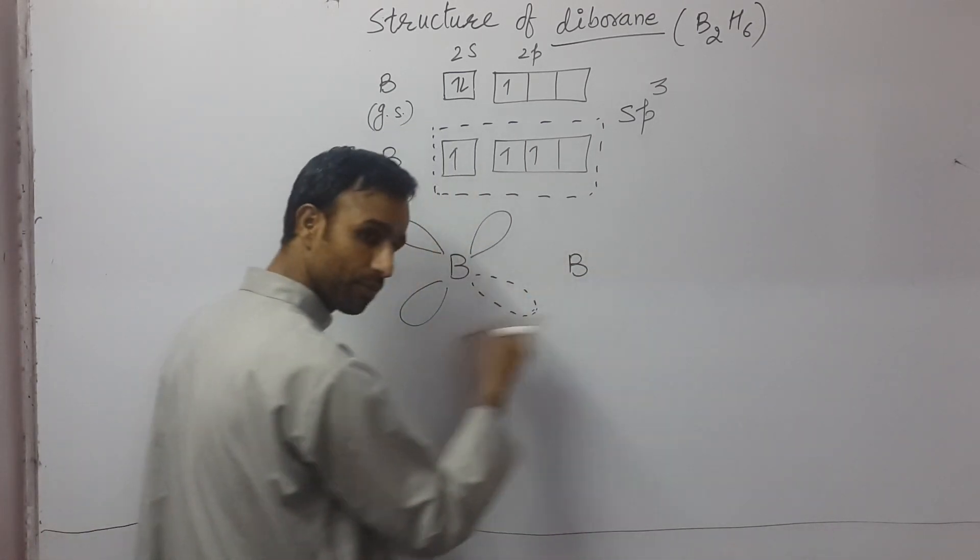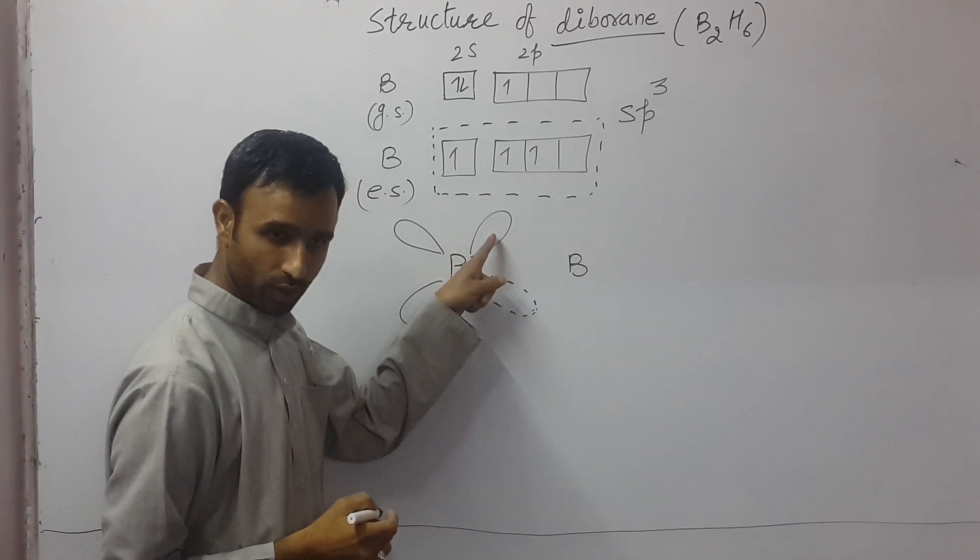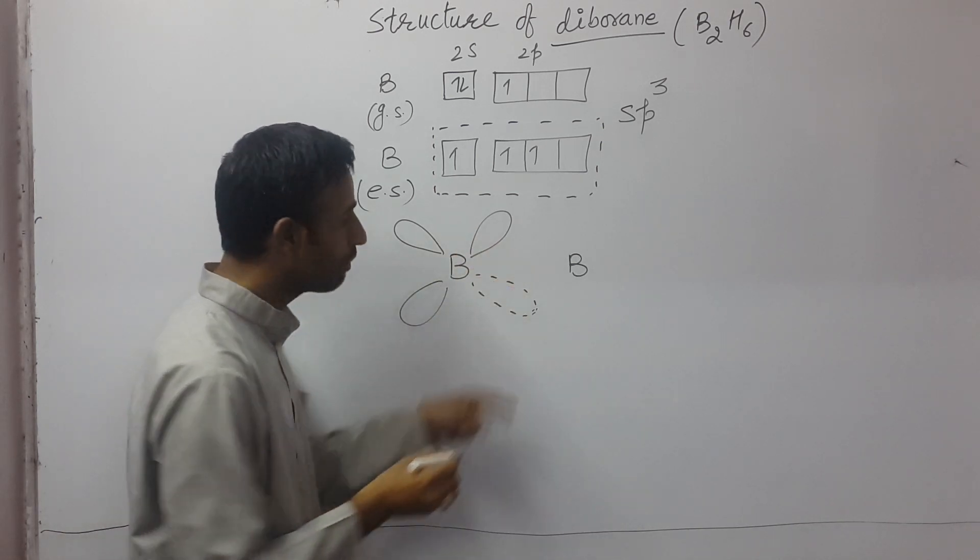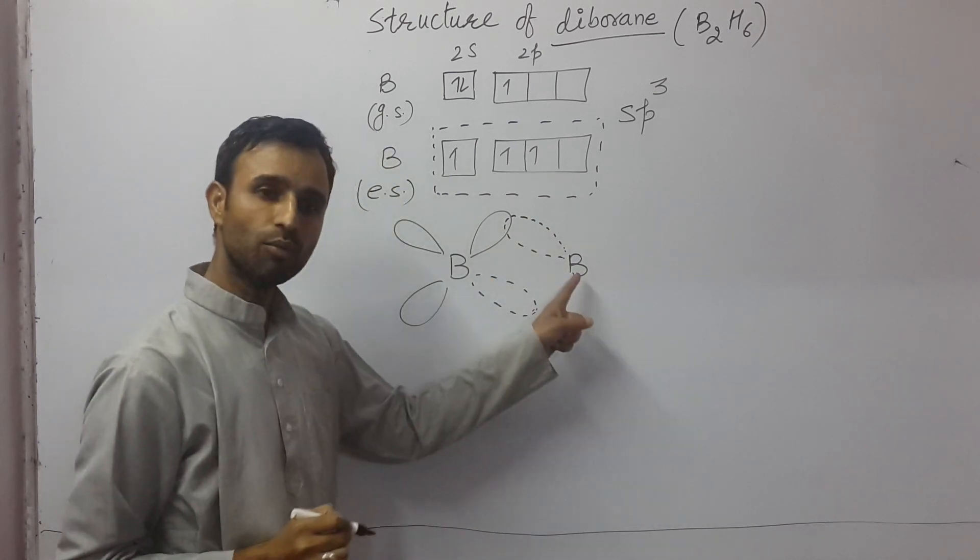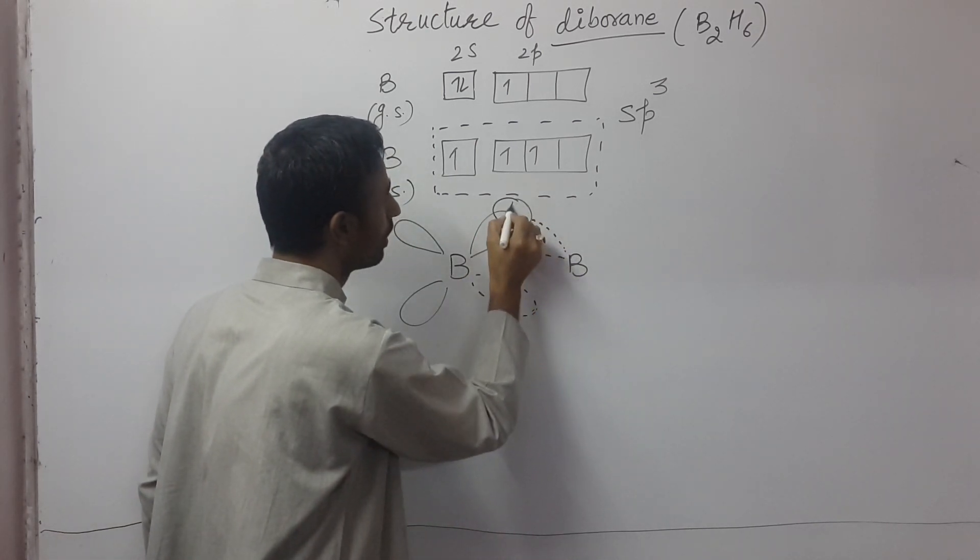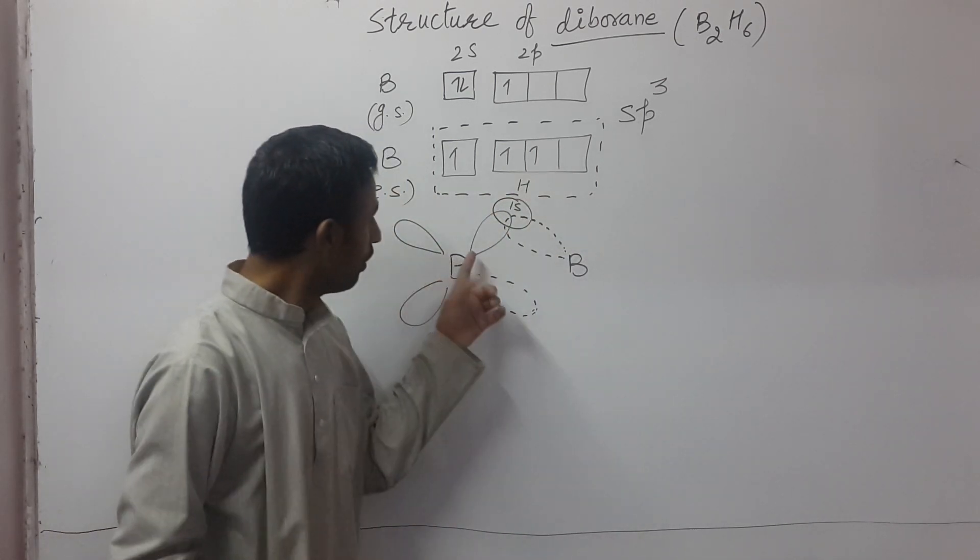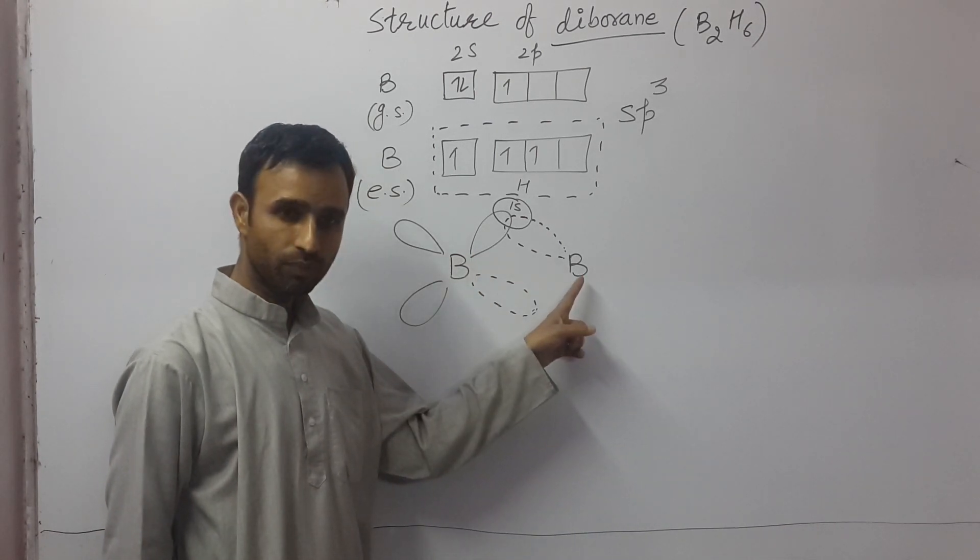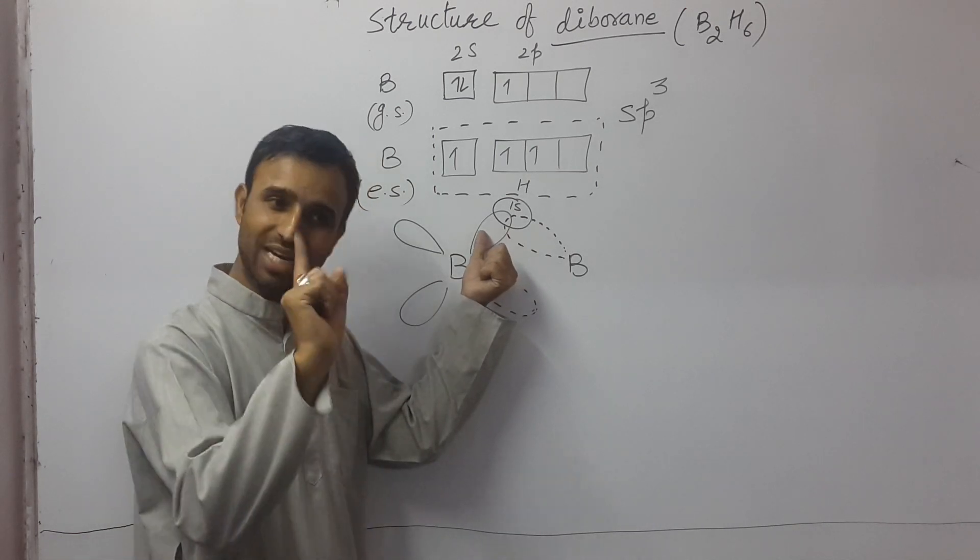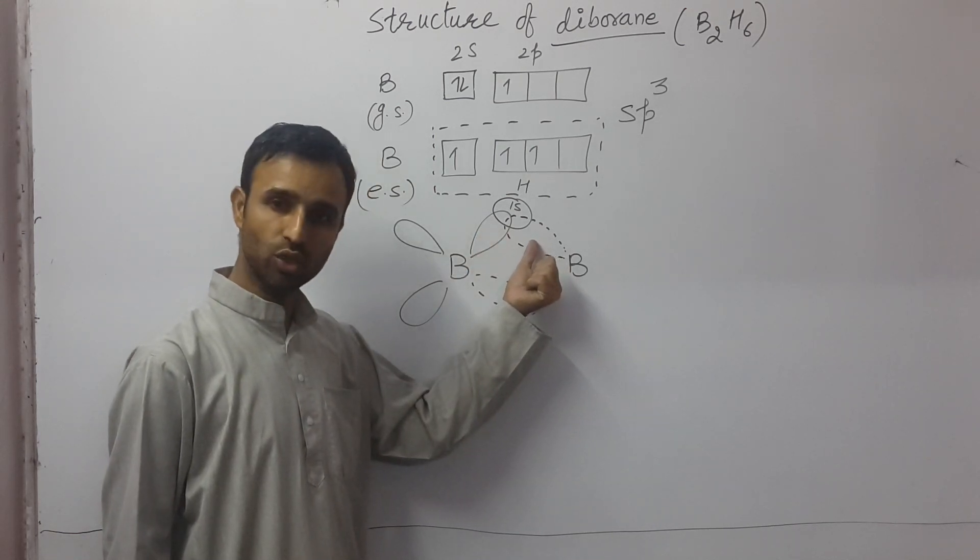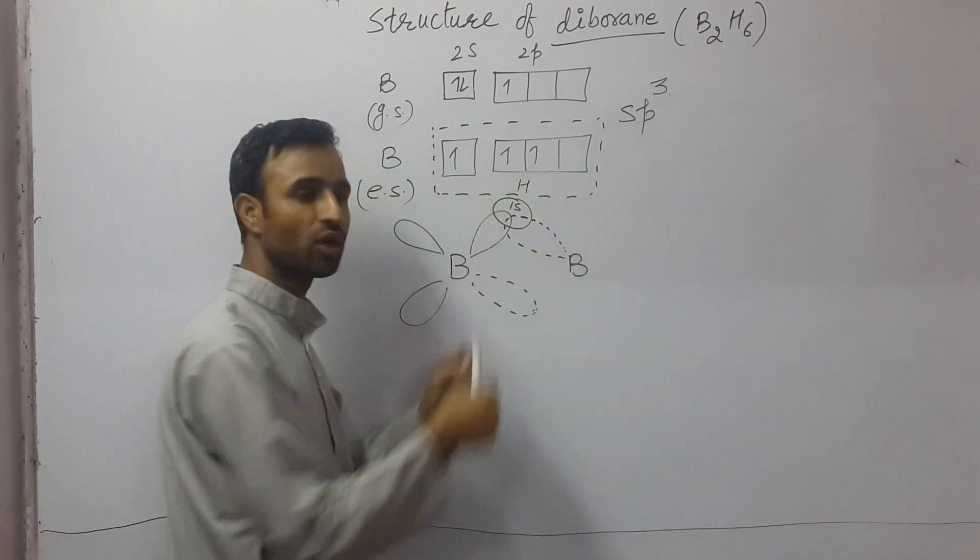So these four orbitals, three are normal with one unpaired electron and one is vacant. Now, second boron is of same type. Now, this orbital of boron having one electron overlaps simultaneously with the vacant orbital of other boron with one unpaired electron.